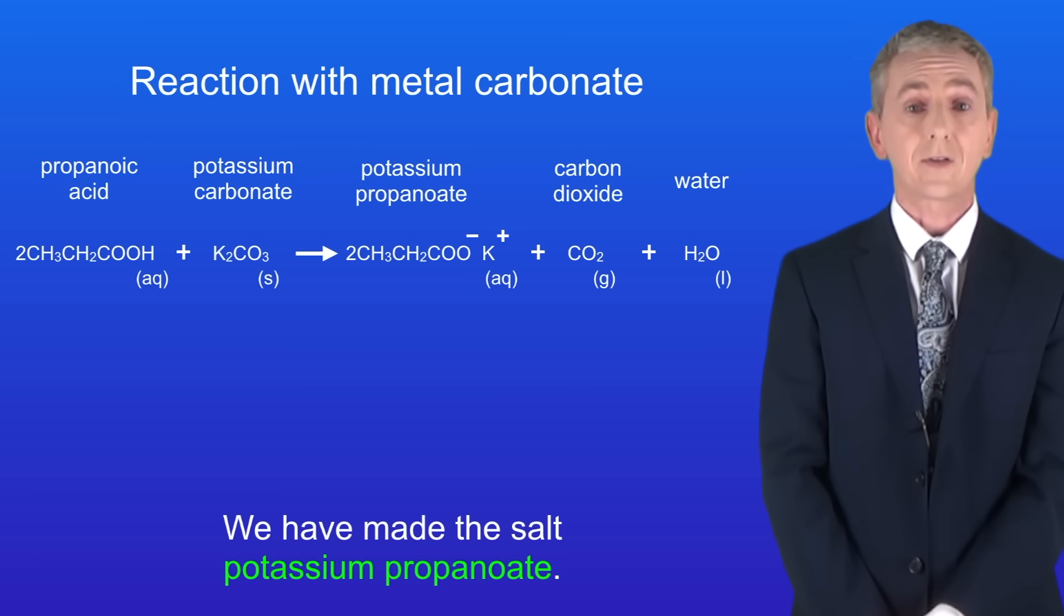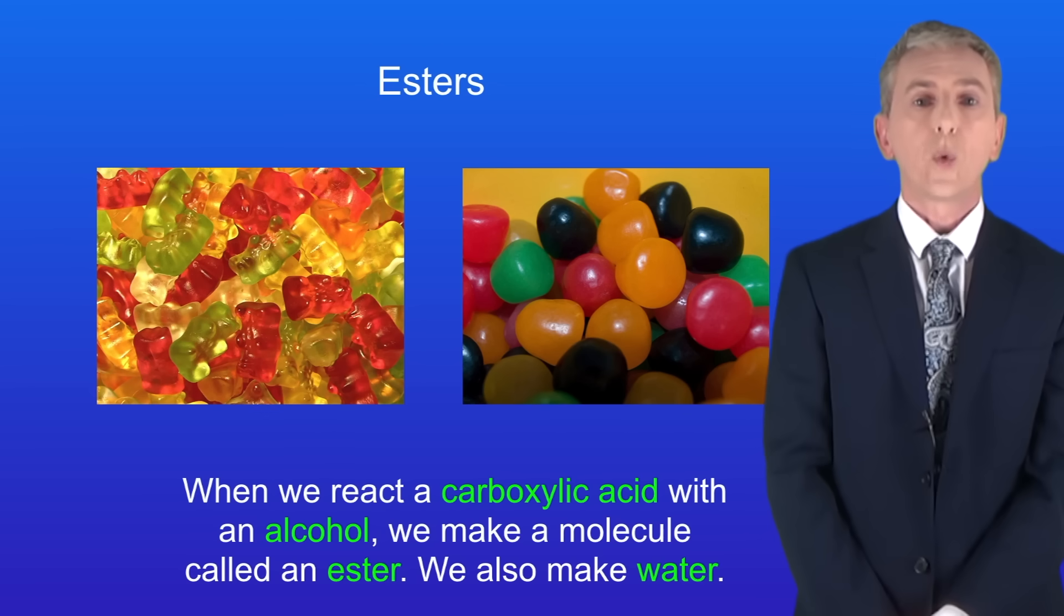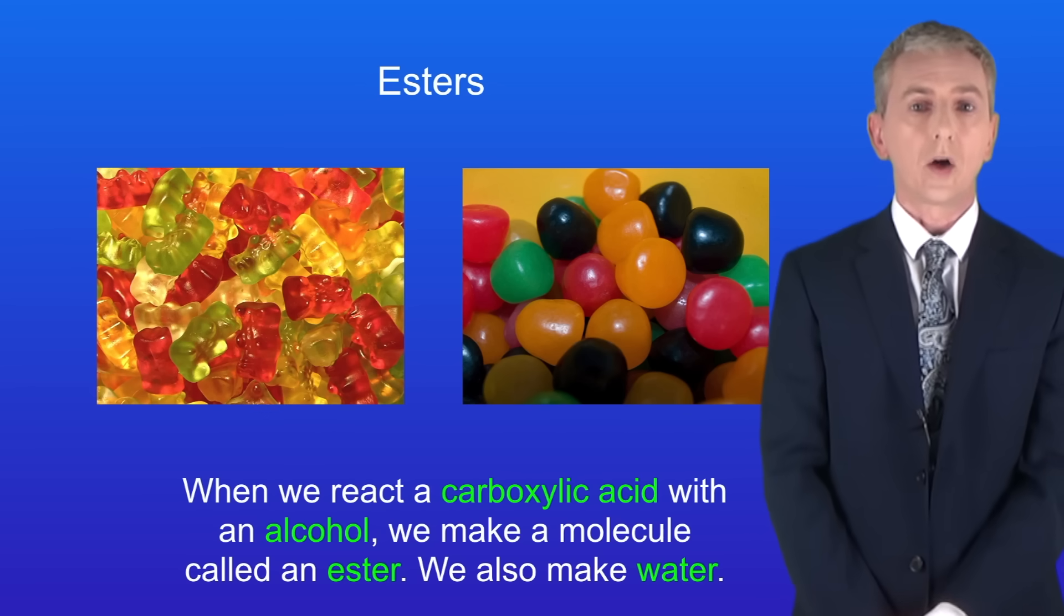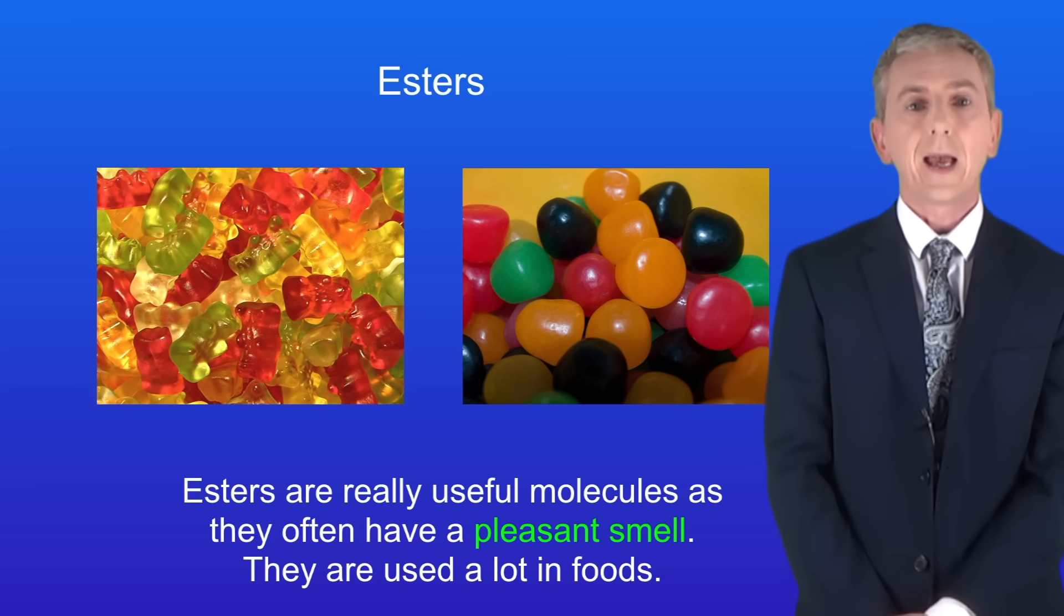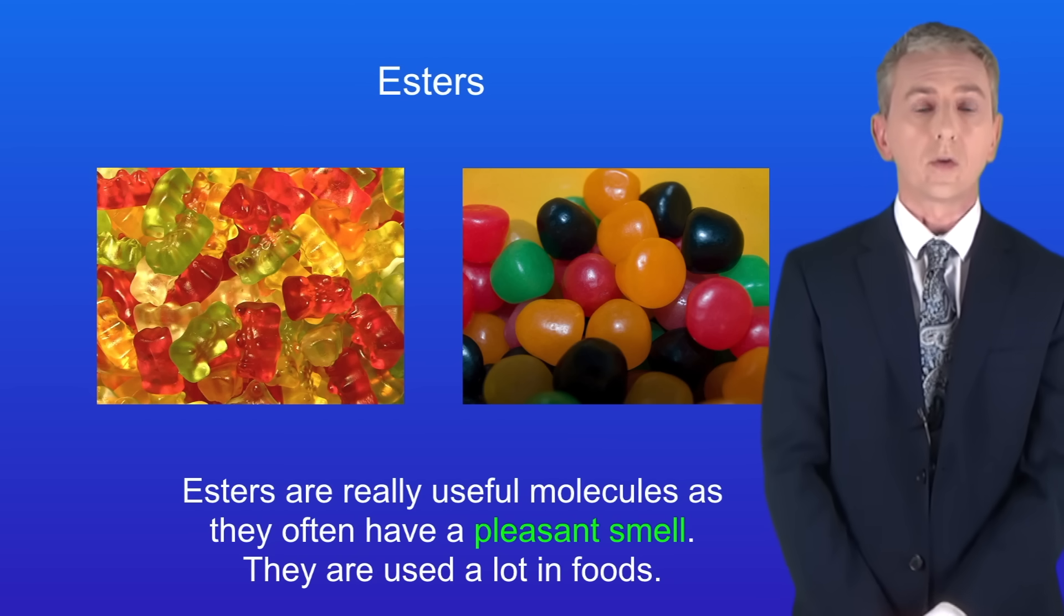The second key reaction of carboxylic acids is with alcohols. When we react a carboxylic acid with an alcohol, we make a molecule called an ester. We also make water. Esters are really useful molecules as they often have a pleasant smell, so they're used a lot in foods.